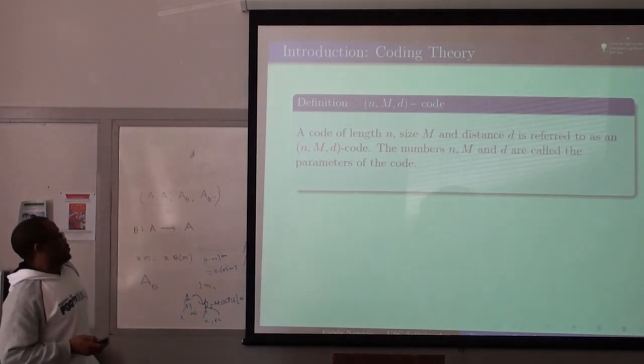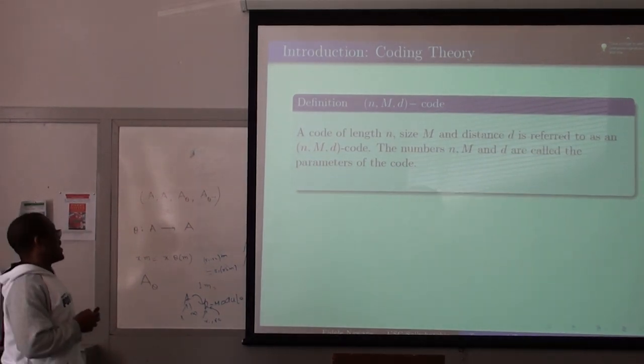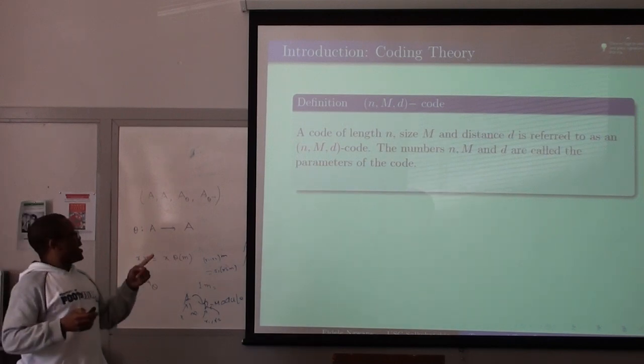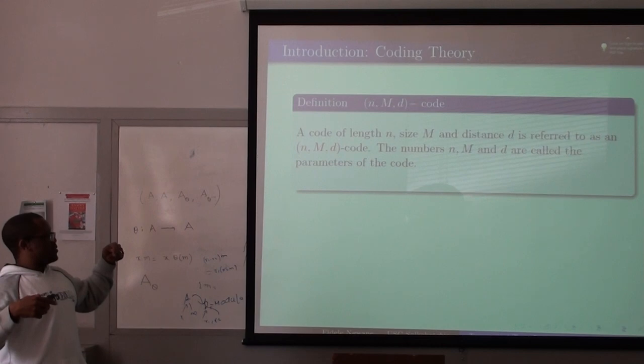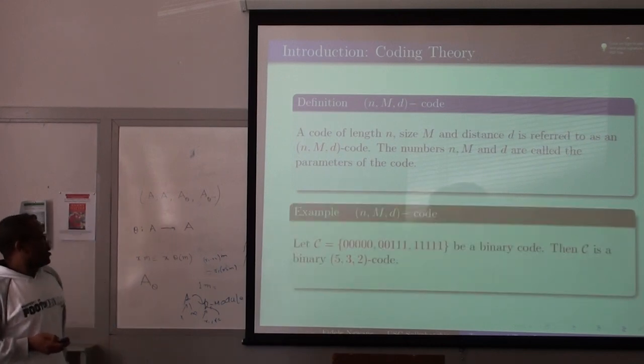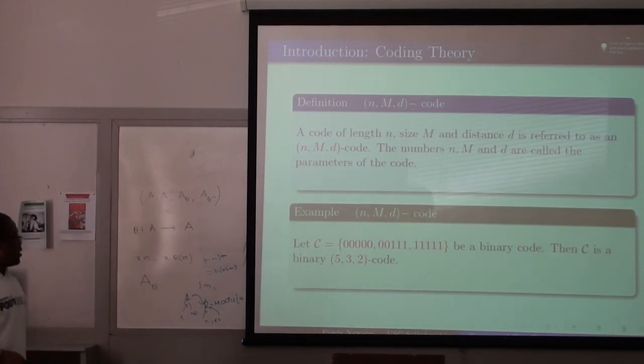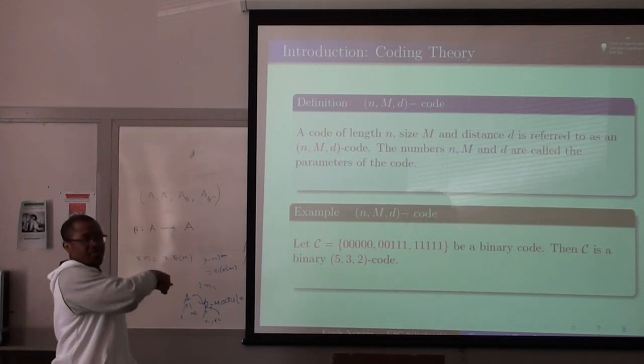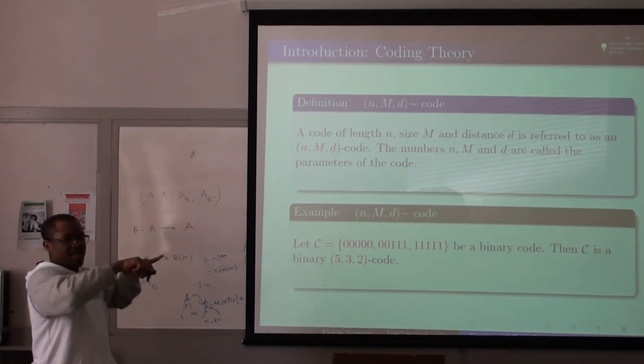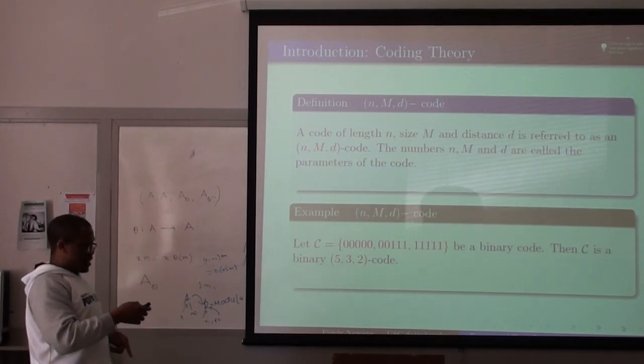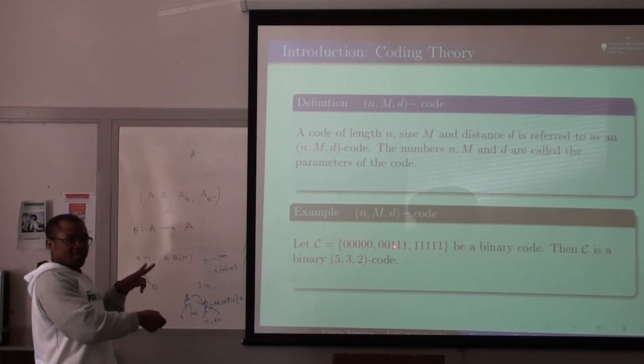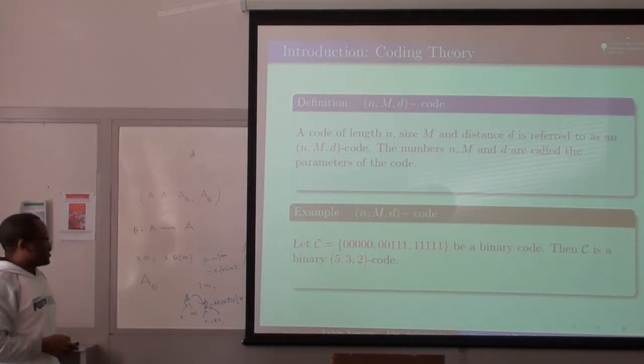With respect to a code, we say that we have an n,M,d code. The code has length n, the size is M, and the minimum distance is d. Those are called the parameters of your code. Here is an example. If I take this code C, it has size 3, three words in it. Each word has length 5, and the minimum distance is 2, because if you look at that word and this one, you already find 2 places that differ.